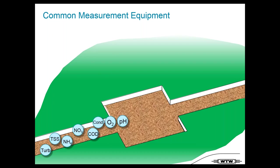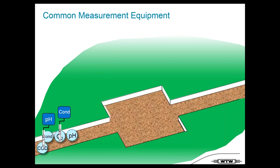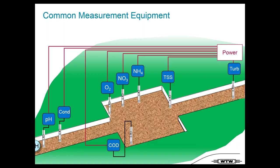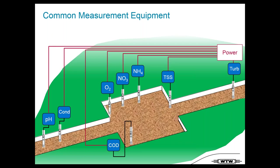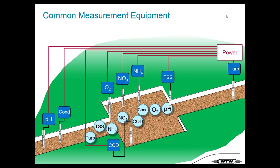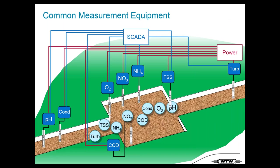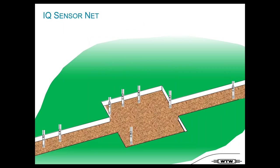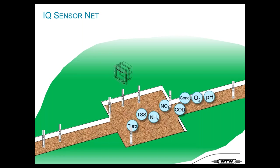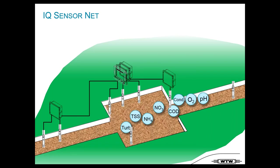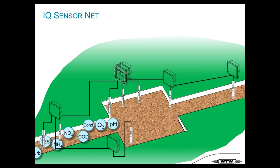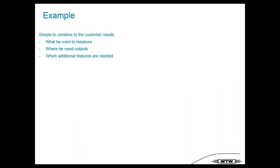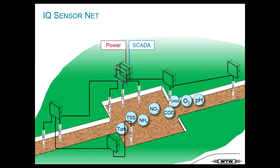Looking at the past, common measurement equipment meant having specialized transmitters and sensors for every location — one transmitter, one sensor, different technologies — and you needed power and a connection to the SCADA system everywhere. That was a lot of work. With this background we came up with the idea of IcoSensorNet: putting all intelligence inside the sensor and connecting everything simply with a daisy chain.